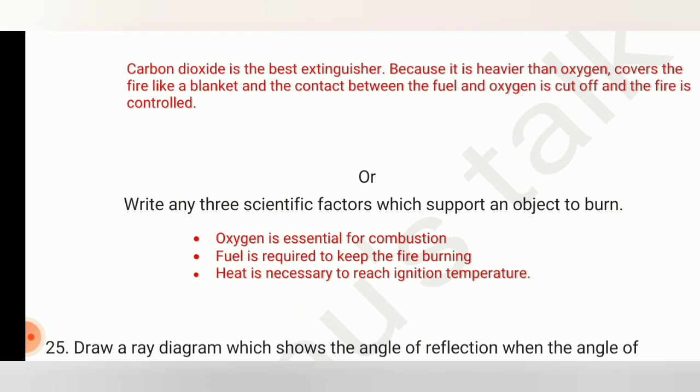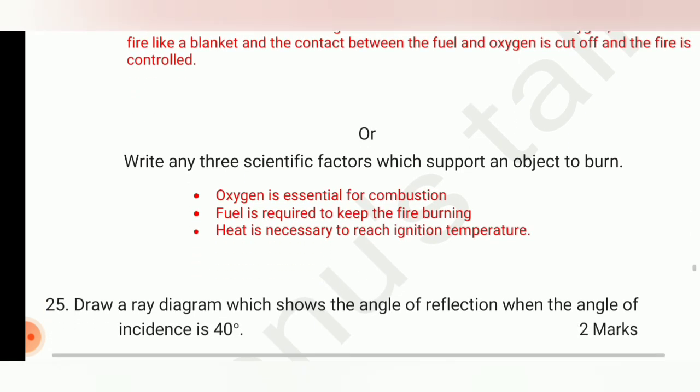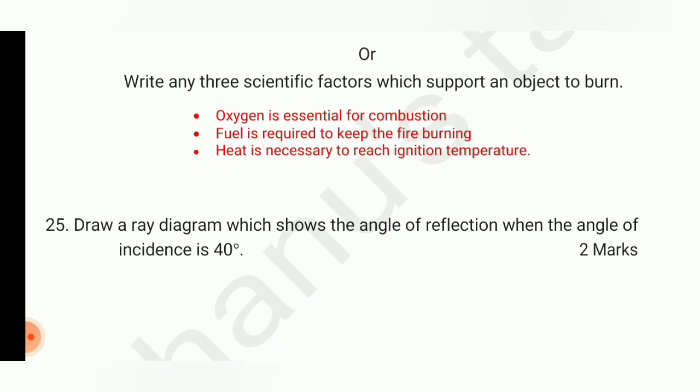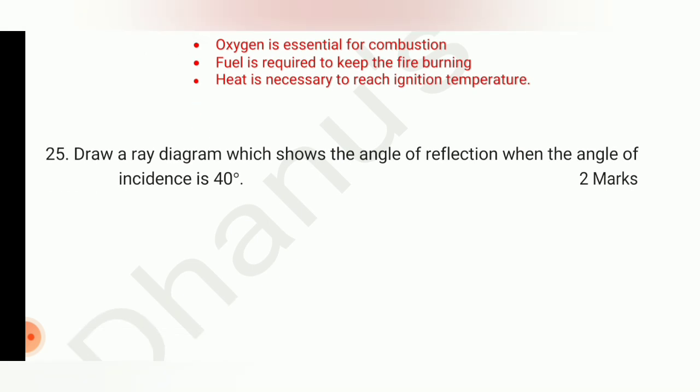For the option question: write any three scientific factors which support an object to burn. The three factors are: oxygen is essential for combustion, fuel is required to keep the fire burning, and heat is necessary to reach the ignition temperature.